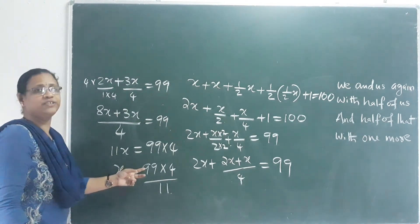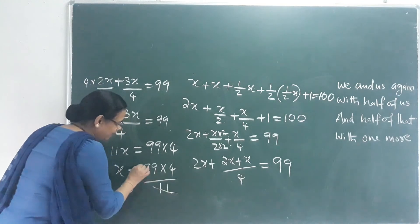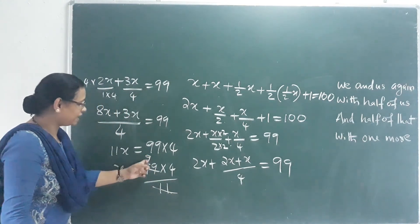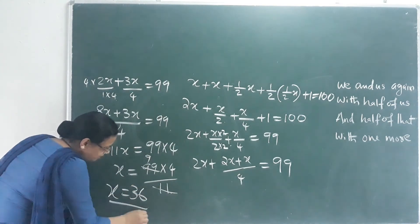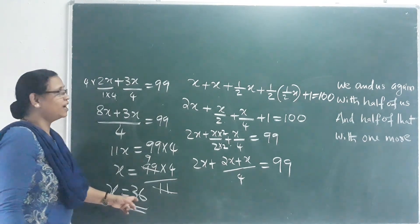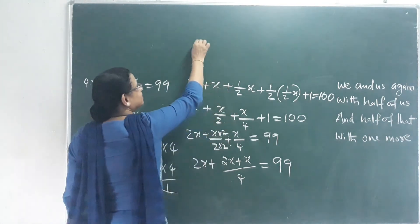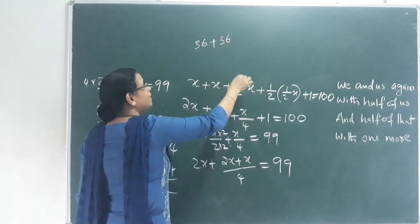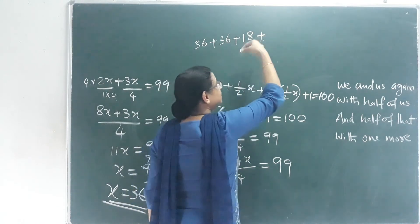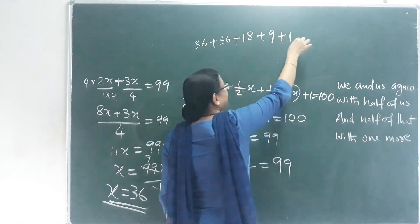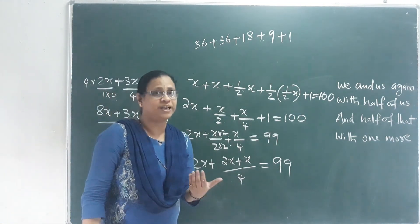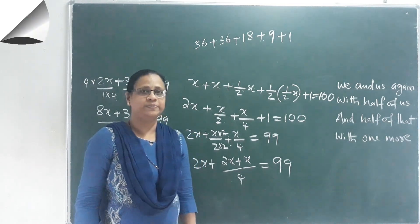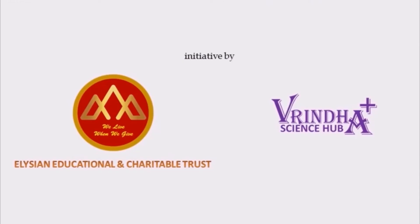So x equals 36. The answer is 36 birds. Let's verify: 9 into 11 is 99, 9 into 4 is 36. So x equals 36. Thank you.